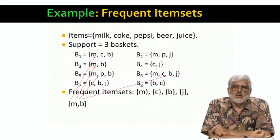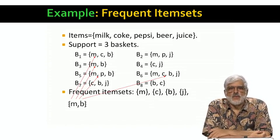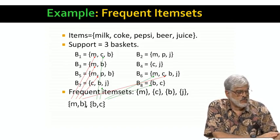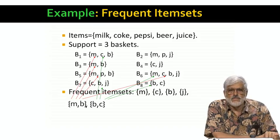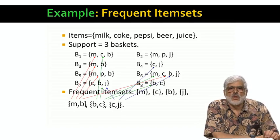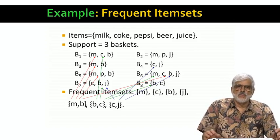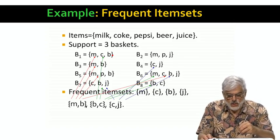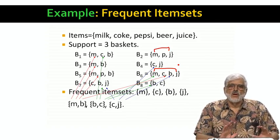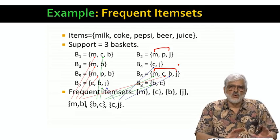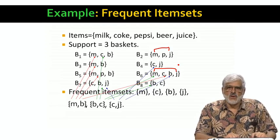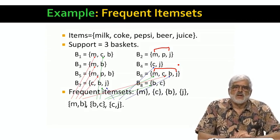There are also some frequent doubletons. For example, milk and beer appear together in the four baskets shown. And beer and Coke also appear in four baskets. And finally, Coke and juice appear together in three baskets. But no other doubletons are frequent. For example, milk and juice appear together in B2 and B6 but in no other baskets. Also, there are no sets of three or more items that are frequent, so we're done. We've found all the frequent item sets. One might have included the empty set, that is surely a subset of all eight baskets, but the fact is uninteresting and we usually ignore the empty set.